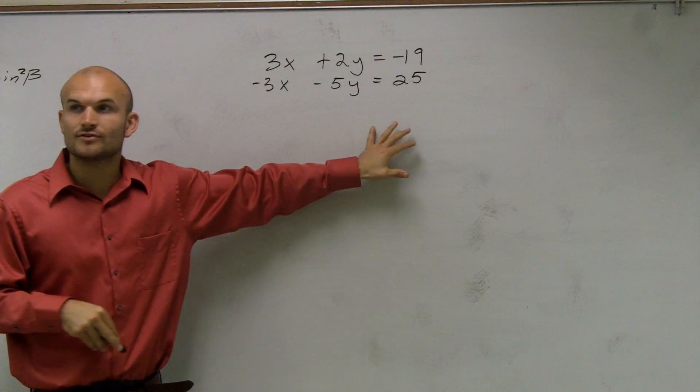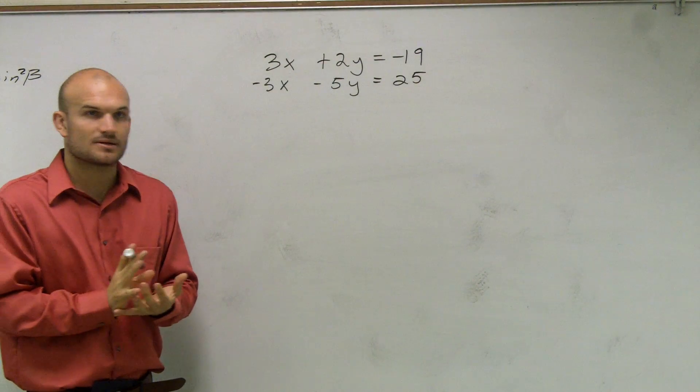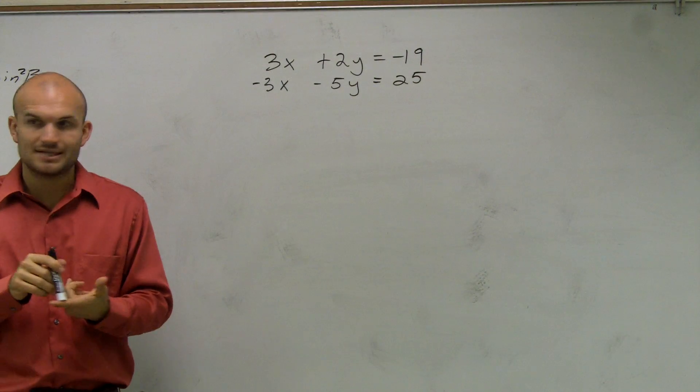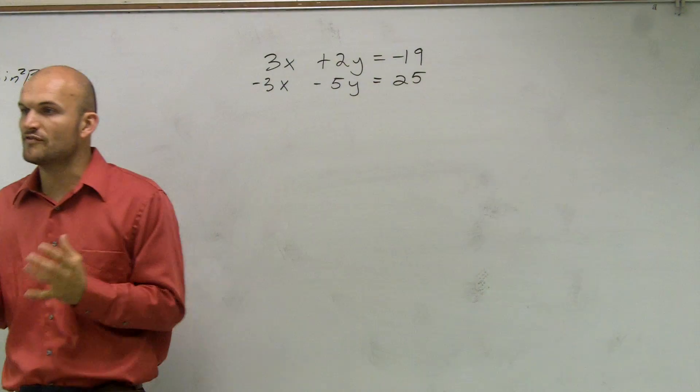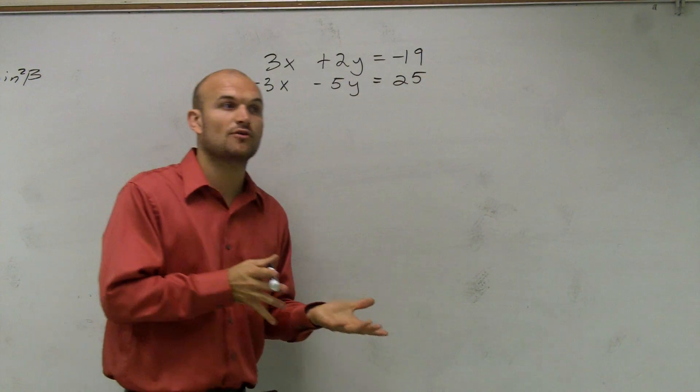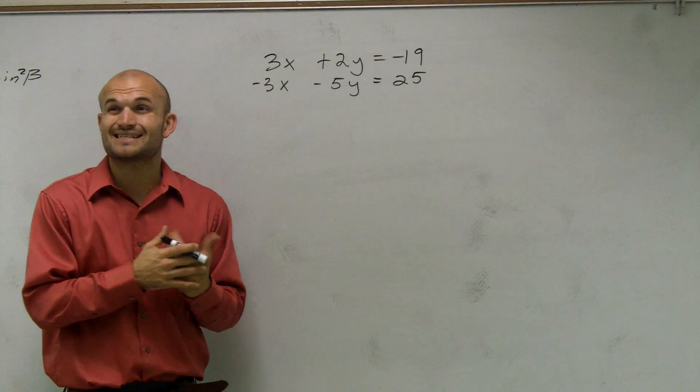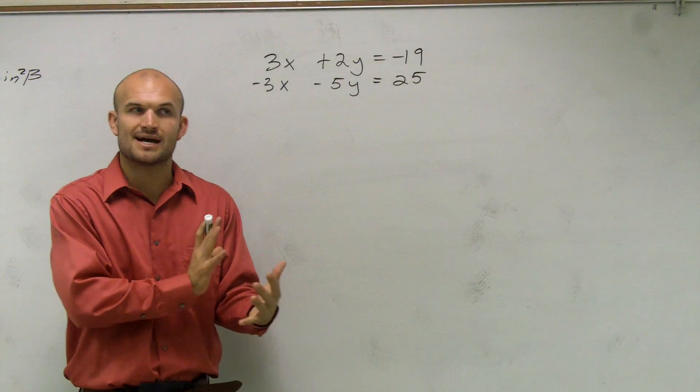So to solve using elimination, remember, we're going to follow some steps. We can use elimination when we make sure that we have our variables have the exact same coefficients in front of them. If they don't have the same coefficients, we're going to have to manipulate them. But for this problem, we want to look at which variable has the exact same coefficient, regardless of the sign.